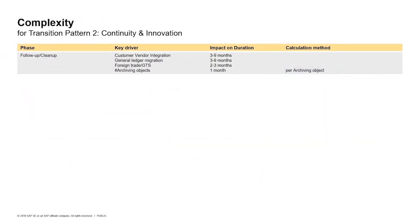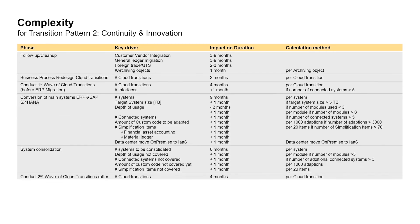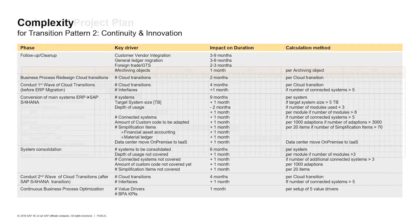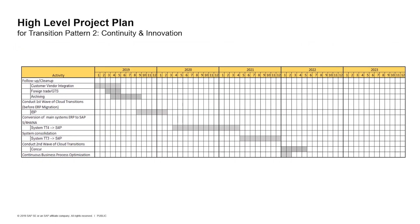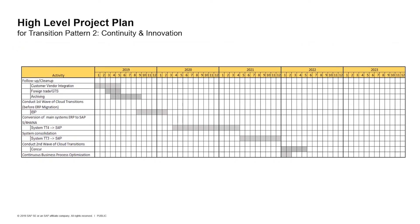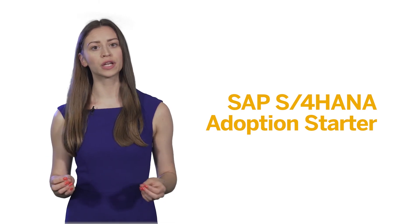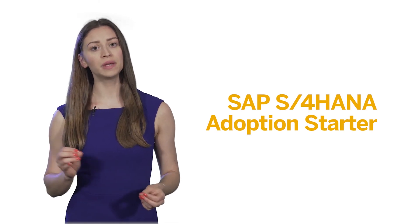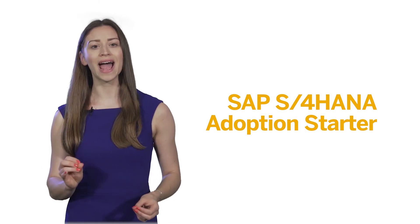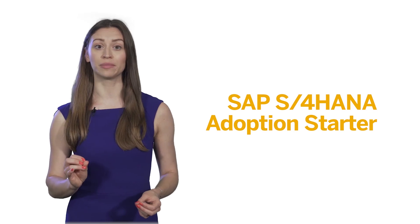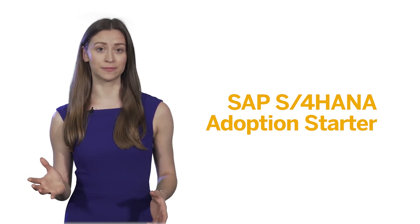From what you have learned in modules 1-8, you will be able to select the complexity drivers relevant to your situation from the list provided and learn what the implications for project duration are. In another mix of classwork and homework, you will then be able to generate your very own high-level project plan and corresponding timeline.